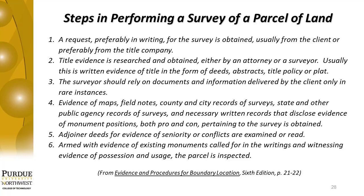At this point, the authors have put together steps in performing a survey of a parcel of land, prefacing the list by saying that in performing a complete survey of any parcel of land, whether considered an original survey or a retracement, certain steps should be followed usually in this order. Number one: a request, preferably in writing, for the survey is obtained usually from the client or preferably from the title company. Number two: title evidence is researched and obtained either by an attorney or a surveyor — usually written evidence in the form of deeds, abstracts, title policy, or plat. Number three: the surveyor should rely on documents and information delivered by the client only in rare instances.